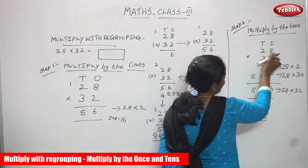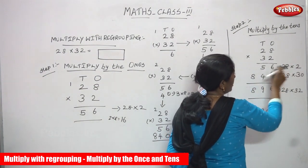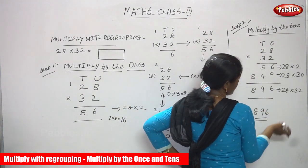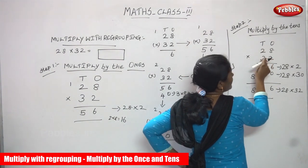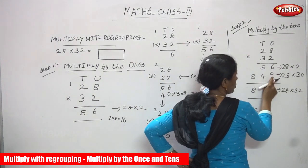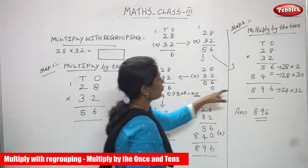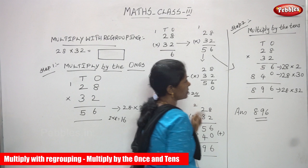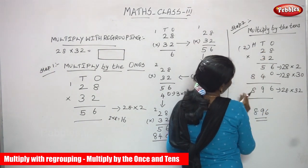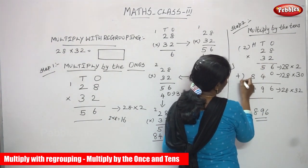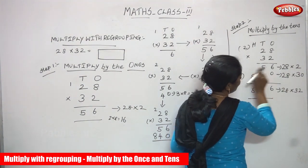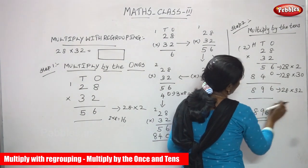So 28 into 32: first 28 is multiplied by 2 ones, that is 28 into 2, and the answer is 56. Then you multiply by the tens — 3 tens means 30 — so ones place has no number, we put 0, and 3 eights are 24: the 4 goes in the tens place and carryover is 2. Then 3 twos are 6, plus 2 is 8, which is in the hundreds place. So 28 into 2 is 56 and 28 into 30 is 840. Adding them: 28 into 32 is 896.